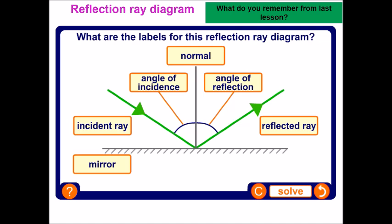Looking back and thinking about yesterday's lesson, can you remember what all of these different things are called? Point on your screen to which one is the incident ray, the mirror surface, the reflected ray, the line of normal, the angle of reflection, and the angle of incidence. And remember, our angle of incidence is equal to our angle of reflection.